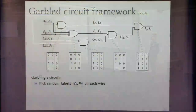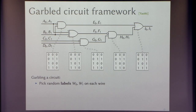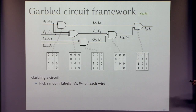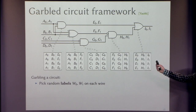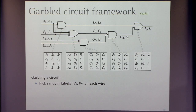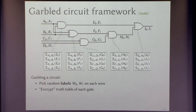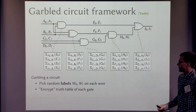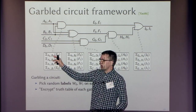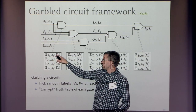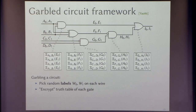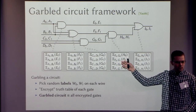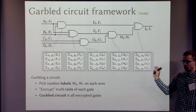The idea to garble a circuit: for each wire in the circuit, we pick two random cryptographic keys — I'll call them wire labels — a 0 wire label and a 1 wire label on each wire. The wire label with subscript 0 corresponds to false, and subscript 1 corresponds to true. I've replaced the semantic values in the truth tables with these abstract wire labels as encodings of true and false. The big idea is to encrypt each gate — encrypt the output wire label using a pair of input wire labels.